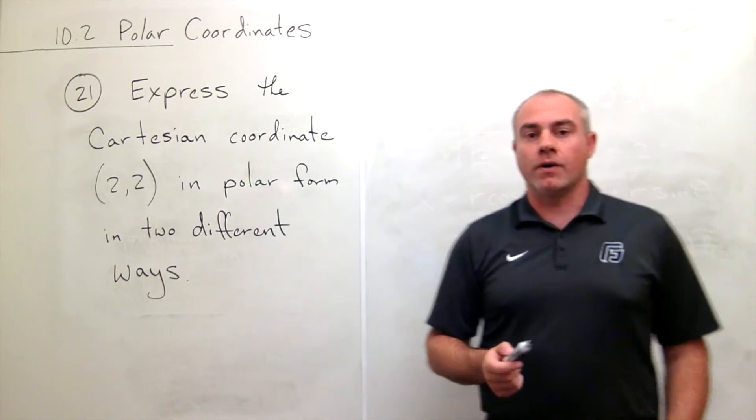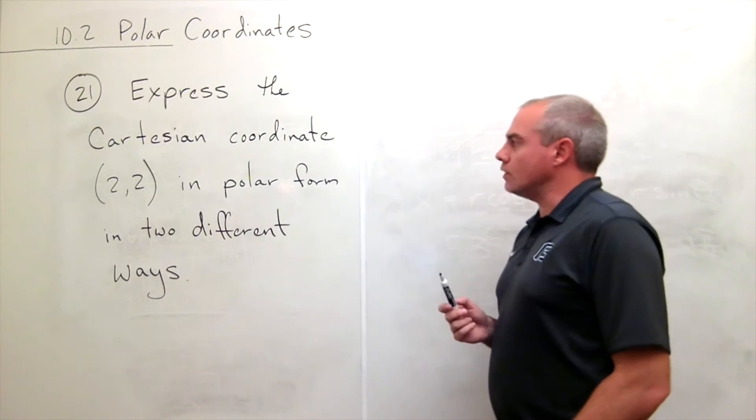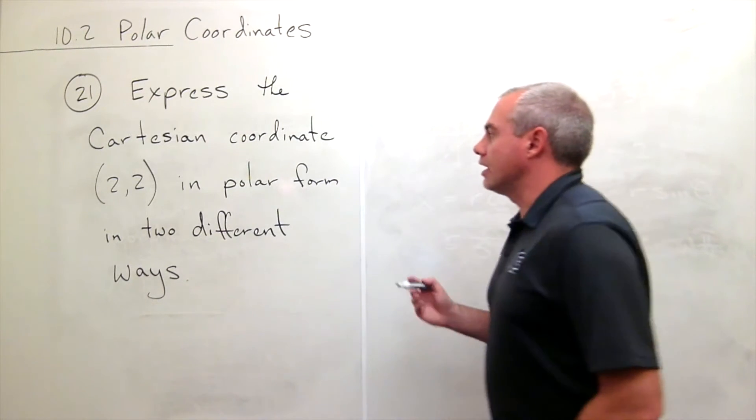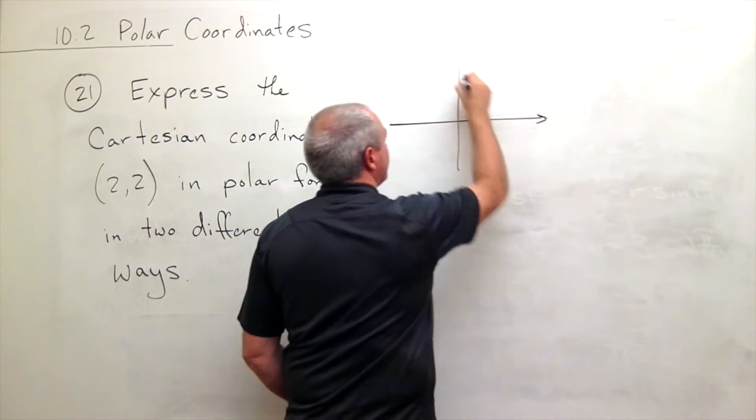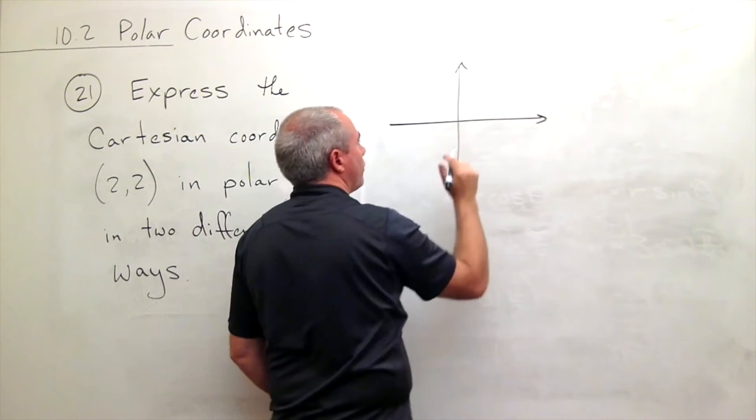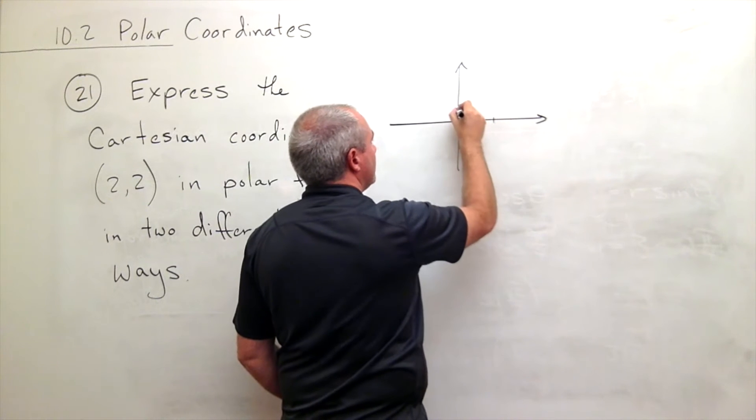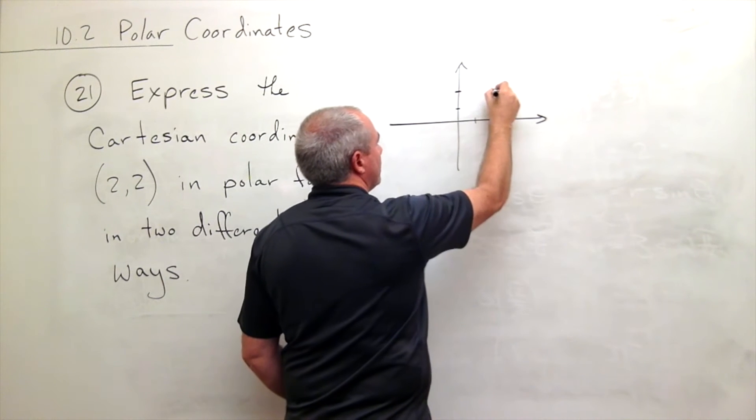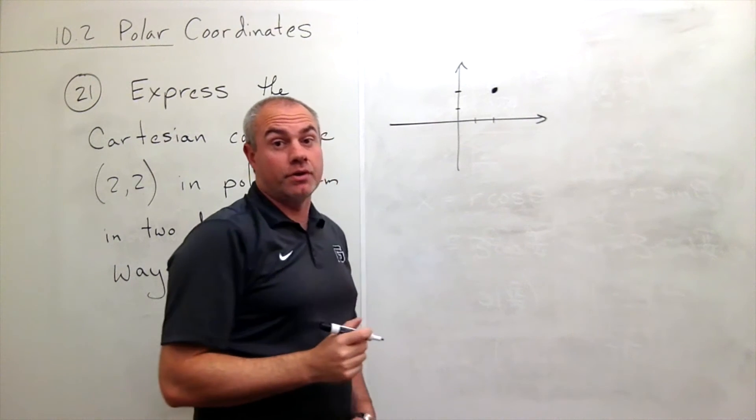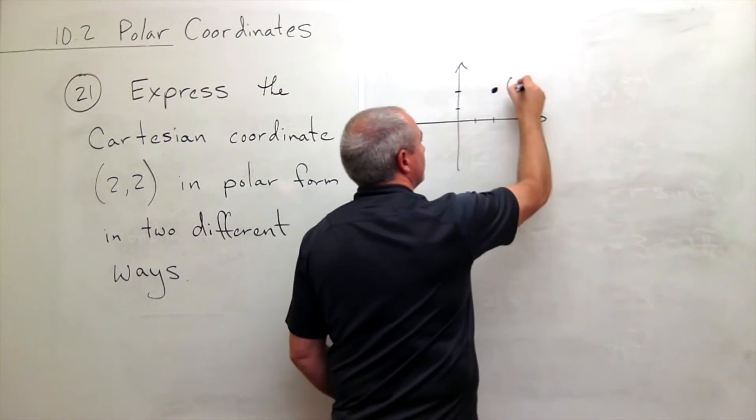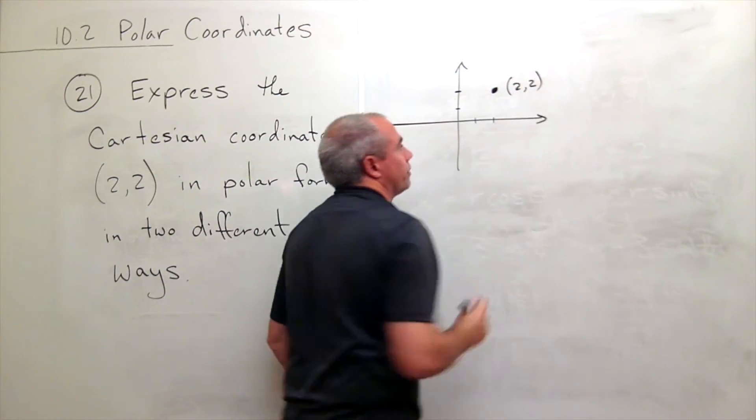All right, so what I have here is the Cartesian coordinate (2, 2). So here's my x-axis, my y-axis. I go out 2, I go up 2, and I get my point (2, 2) in Cartesian. So here's (2, 2).